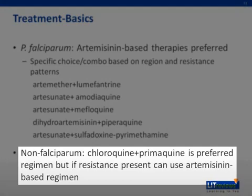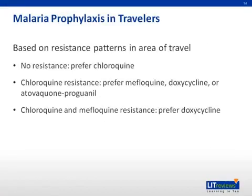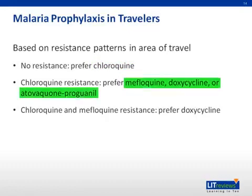The medications recommended for malaria prophylaxis in travelers vary depending on the region of travel and local resistance patterns. Chloroquine is recommended as first-line therapy unless resistance rates are high. If they are, mefloquine, doxycycline, or atovaquone-proguanil can be used. If there are high rates of resistance to both chloroquine and mefloquine, doxycycline is preferred.